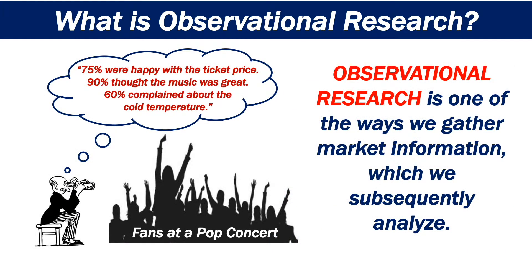Observational research is one of the ways we gather market information, which we subsequently analyse. For example, we can observe fans at a pop concert and then analyse their behaviour. We can determine how many were happy with the ticket price, how many enjoyed the actual concert, and how many complained about the temperature.